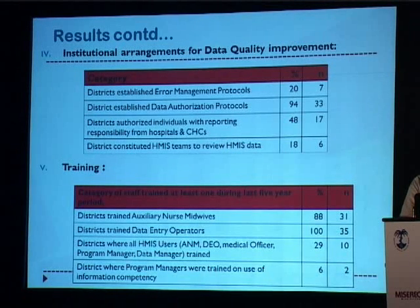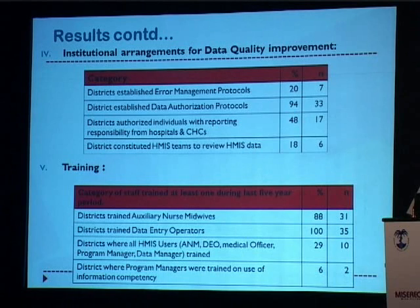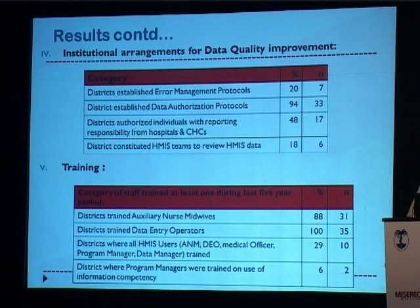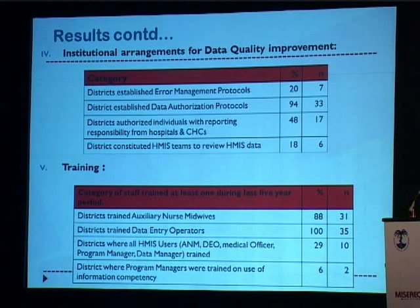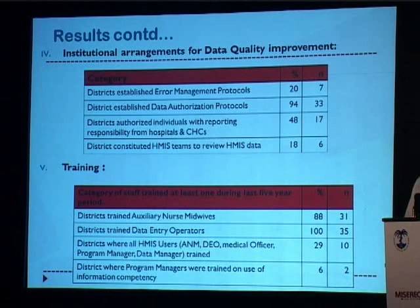Looking at institutional arrangements, we identified that 20% of districts have established error management protocols — guidelines through government orders on what to do when encountering data entry errors, bulk reporting, incomplete reporting, or non-reporting. Almost 94% of districts have authorized a person responsible for data reporting from facilities — sub-centers, PHCs, blocks, and districts. However, only 48% of districts have identified a person responsible for data reporting from district hospitals and CHCs, which has been a major problem since most critical data elements are not being reported from district hospitals. Only 18% of districts constituted an HMIS team to review data, identify training needs, and support capacity building.